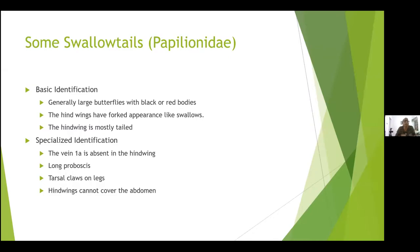They are all large, either black-bodied or red-bodied butterflies. The hindwings have a forked appearance like a swallow's tail — that's why they are called swallowtail. Most species have a tail in the hindwing. A few of them don't have tails, like the Southern Birdwing or the Blue Mormon. Looking at the pictures and the butterflies will give you a better idea.